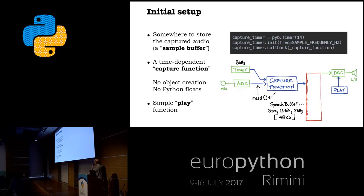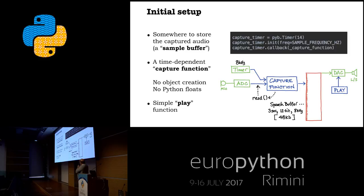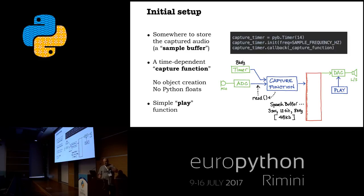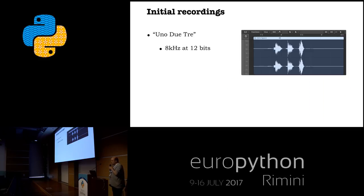Initial setup: I need a buffer to write data into, a function to collect the data, and a play mechanism. Here's my capture function — its responsibility is just to read from the ADC. It's connected to a timer and I create that timer and attach a callback function at a sample frequency of 8 kilohertz, so this function gets called 8,000 times a second. It simply does a read and puts it in a buffer. When that's finished, my play function provides that data to the DAC.